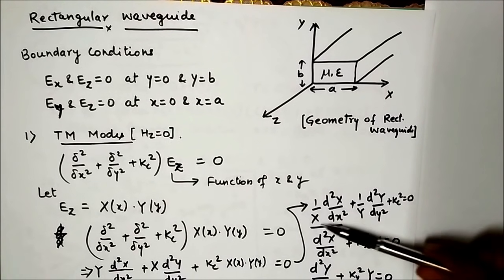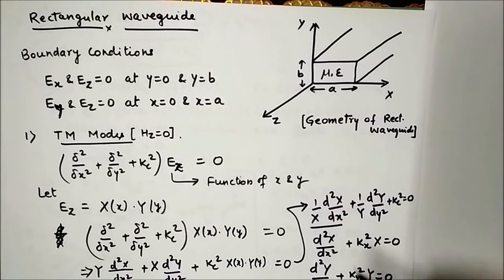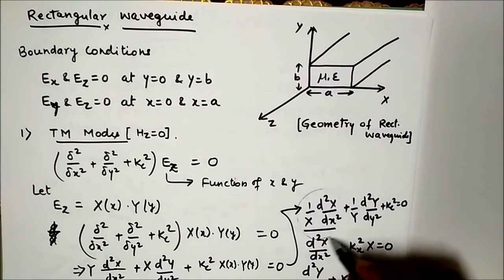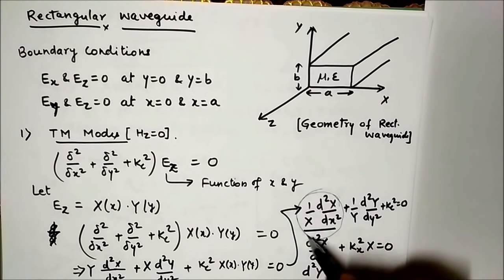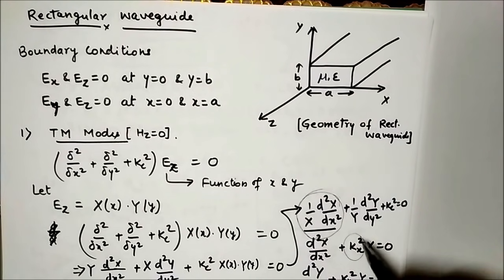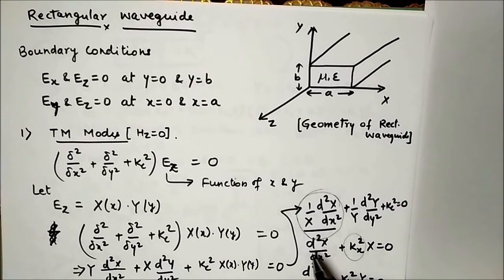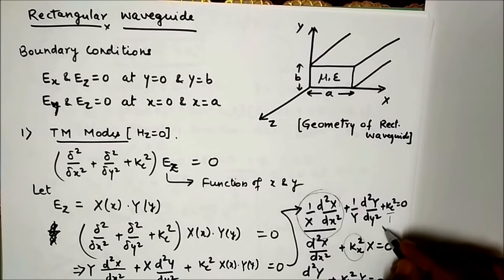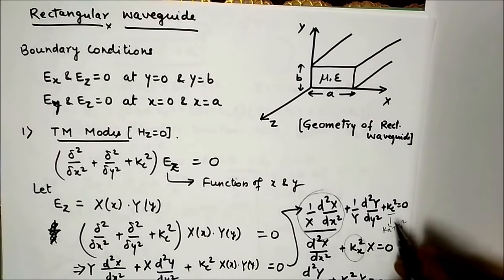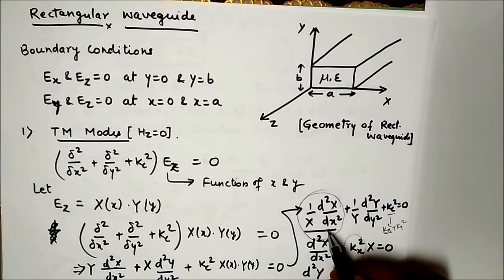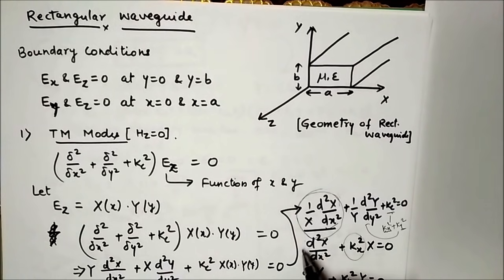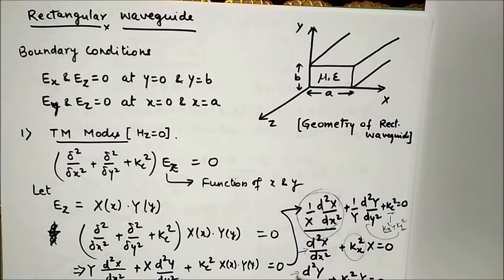We assume Kc² is divided into Kx² and Ky². Kx² is combined with the x function and Ky² is combined with the y function, giving two separate differential equations which can be solved independently.